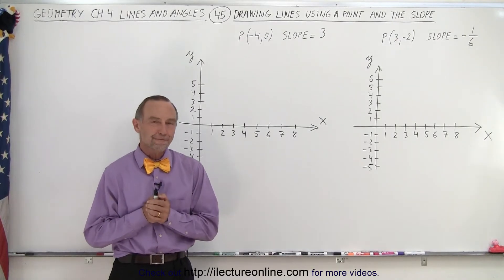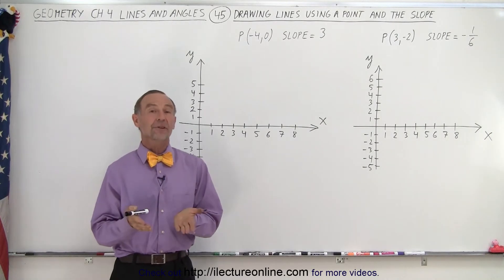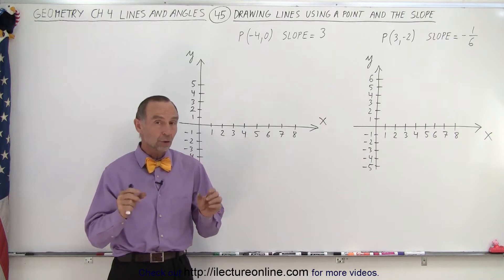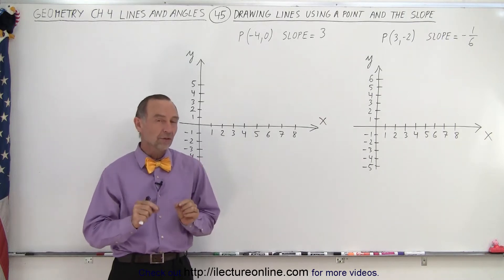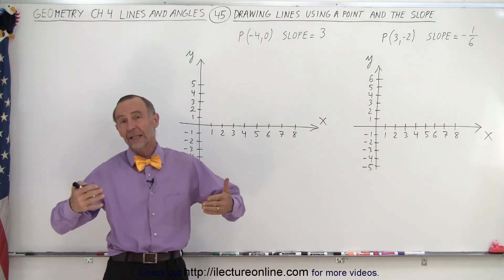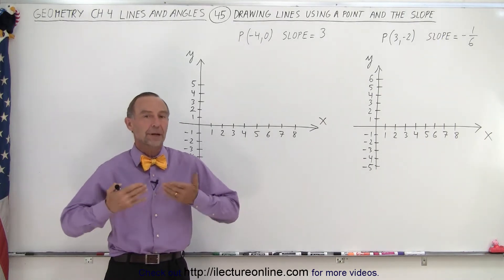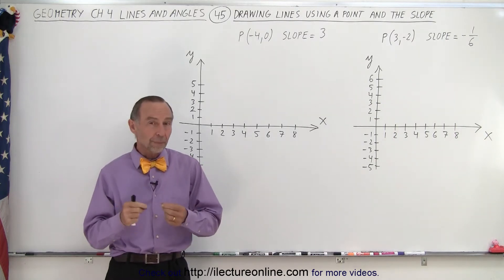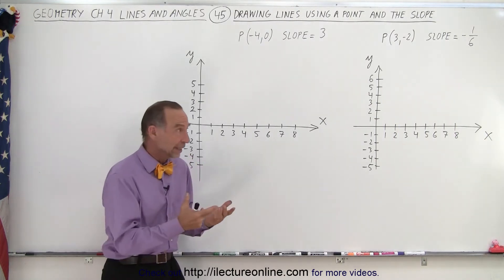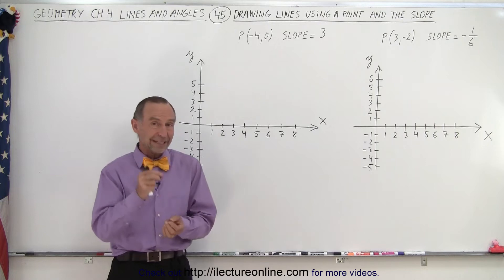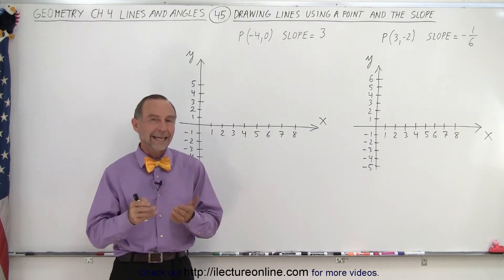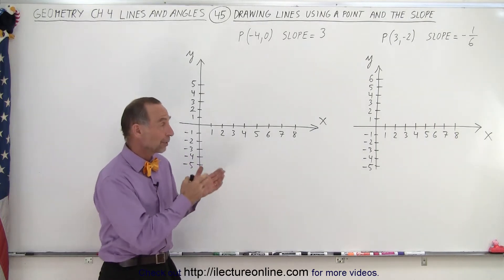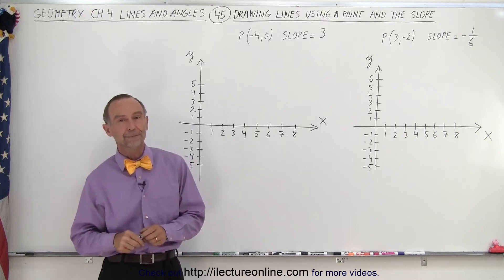Welcome to Electronline. In the previous video, we saw how we could draw lines using two points, then finding the slope, and then graphically comparing the lines to one another. We should also be able to draw the lines graphically if we're given a point on the line and the slope. So here we have two examples of how to do that.